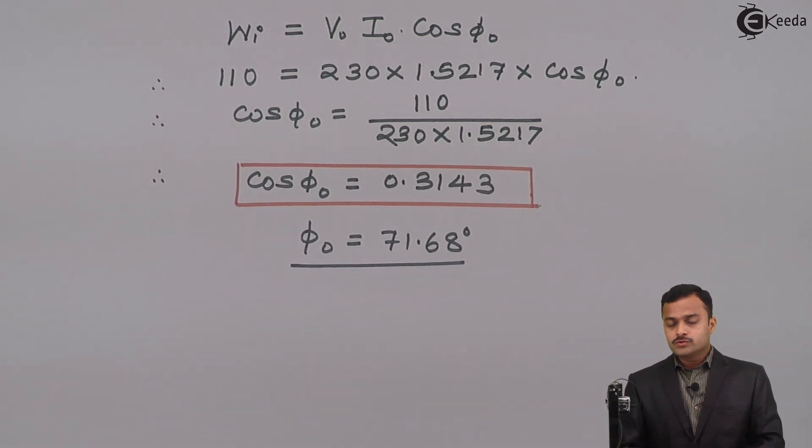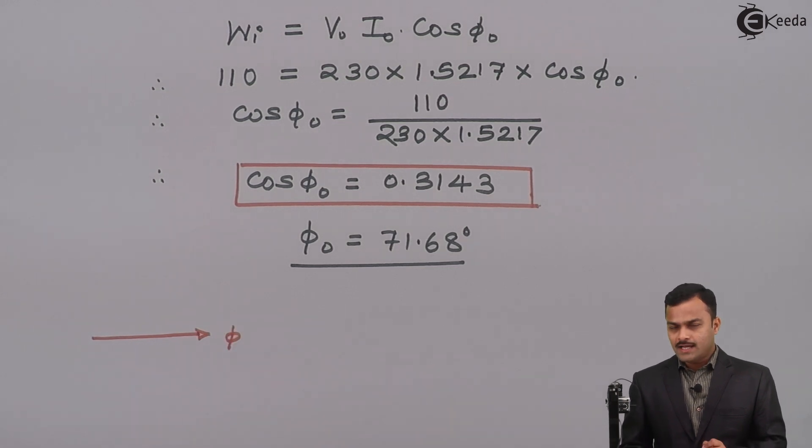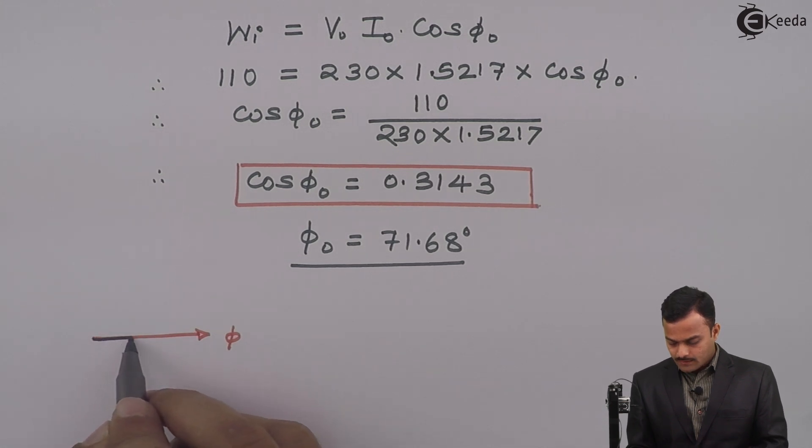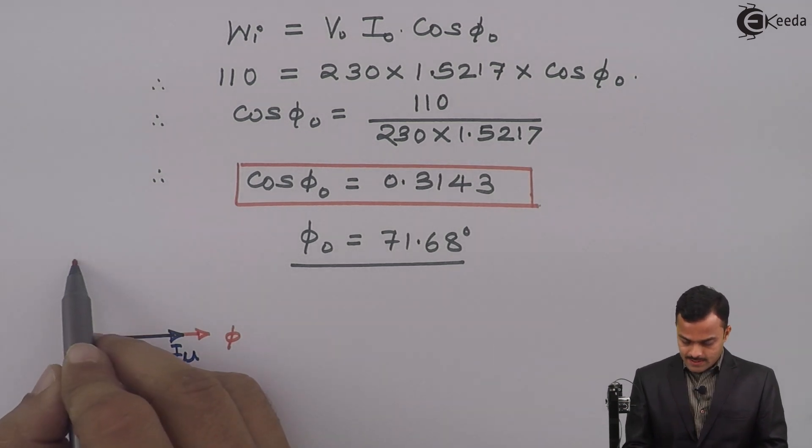Now how we are going to use this φ₀ and I₀ in order to get core loss component and magnetizing component of no load primary current? For that purpose I will draw a small phasor diagram. This is flux Φ. Flux Φ is often whenever there is a magnetizing component of current, that is I_μ. And we have seen that because of this flux Φ, EMF got induced at the primary side and that is equal to E₁.